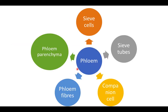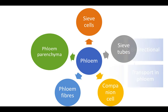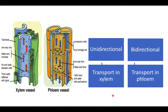Phloem consists of sieve cells, phloem fibers, companion cells, and sieve tubes. Through the joint action of sieve tubes and companion cells, transportation of food — called translocation — takes place.